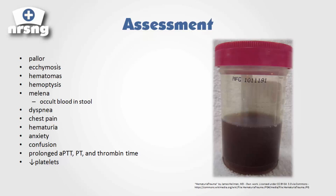Signs and symptoms include pallor — they've lost so much blood they appear very white. They'll develop hematomas, hemoptysis, bruising and ecchymosis throughout their body, melena which is occult blood in the stool, hemorrhea, dyspnea, chest pain, anxiety, and confusion. Labs will show prolonged aPTT, PT, and thrombin time, and platelets will be severely decreased — down under 10,000 even.